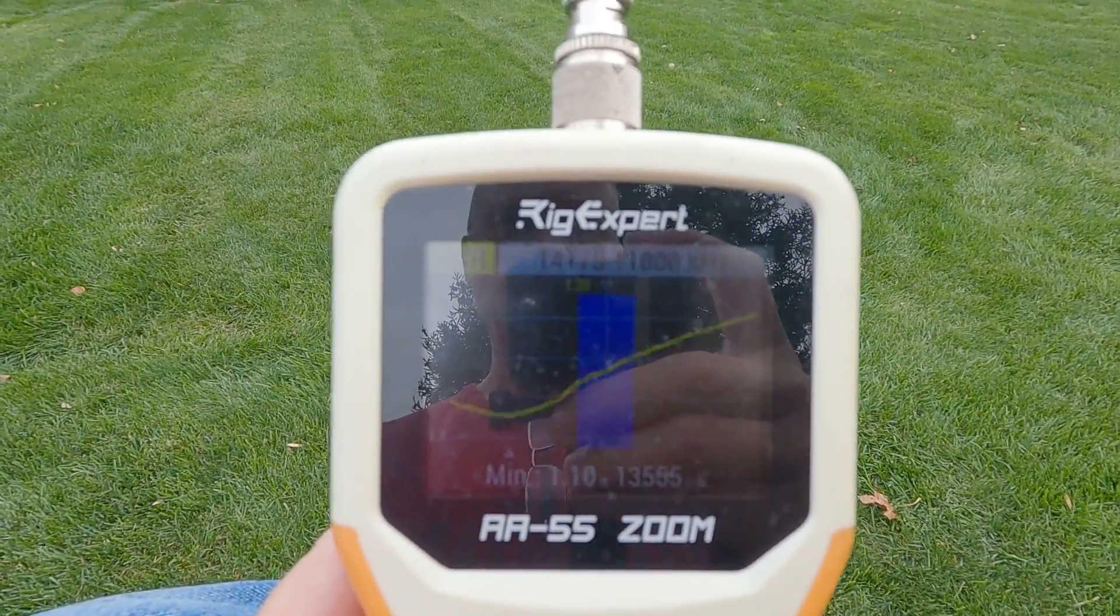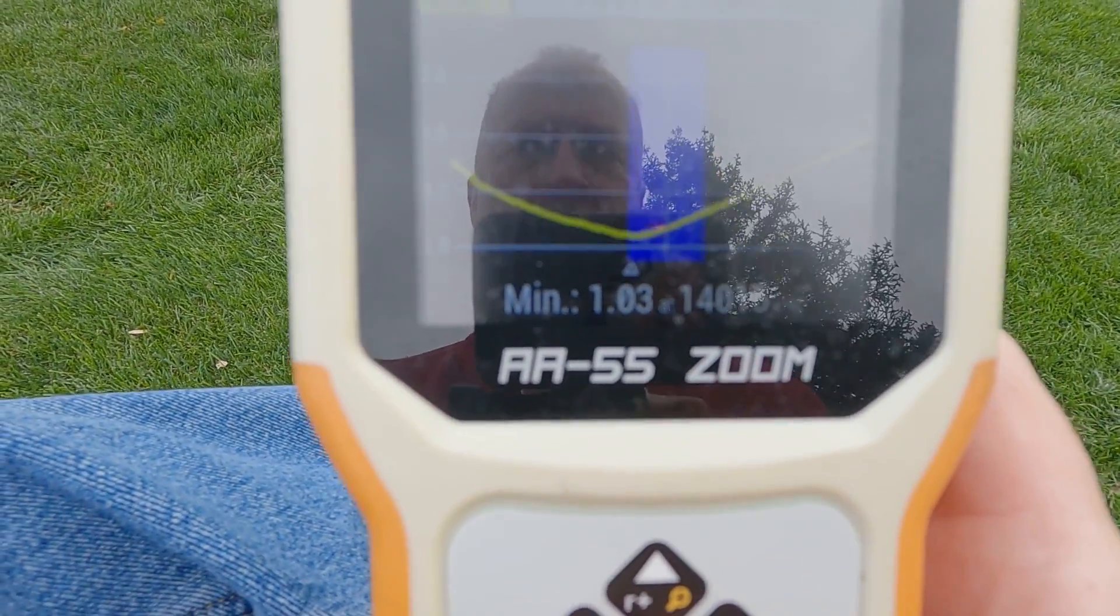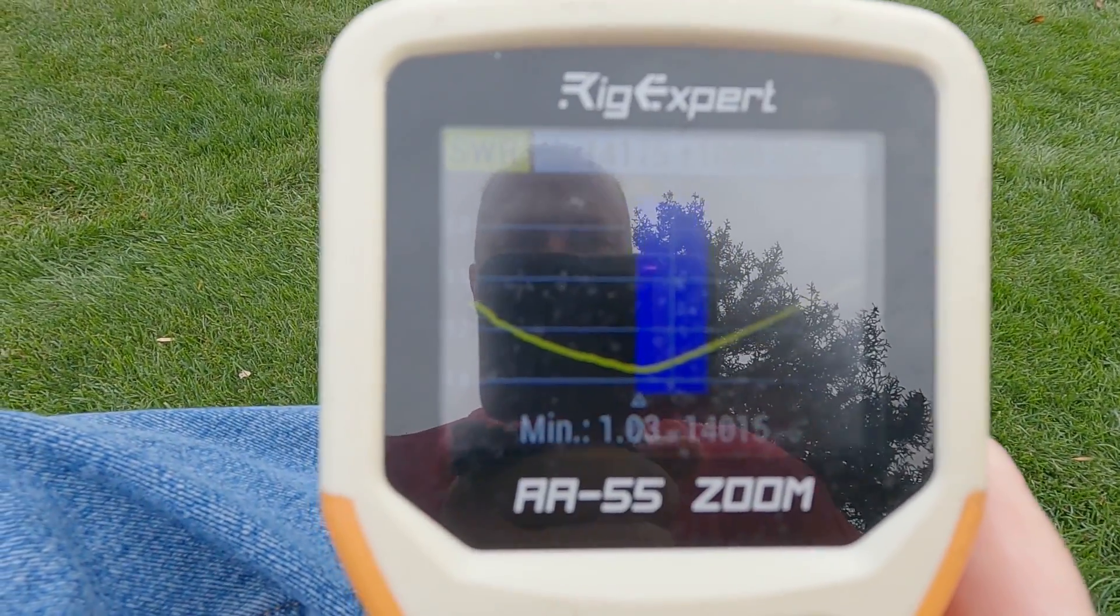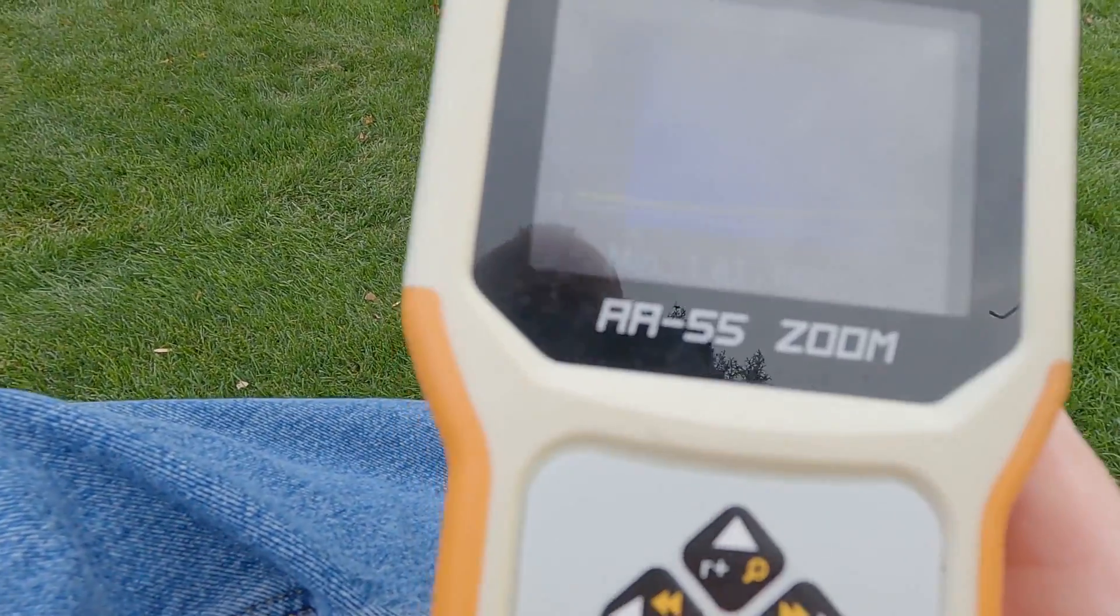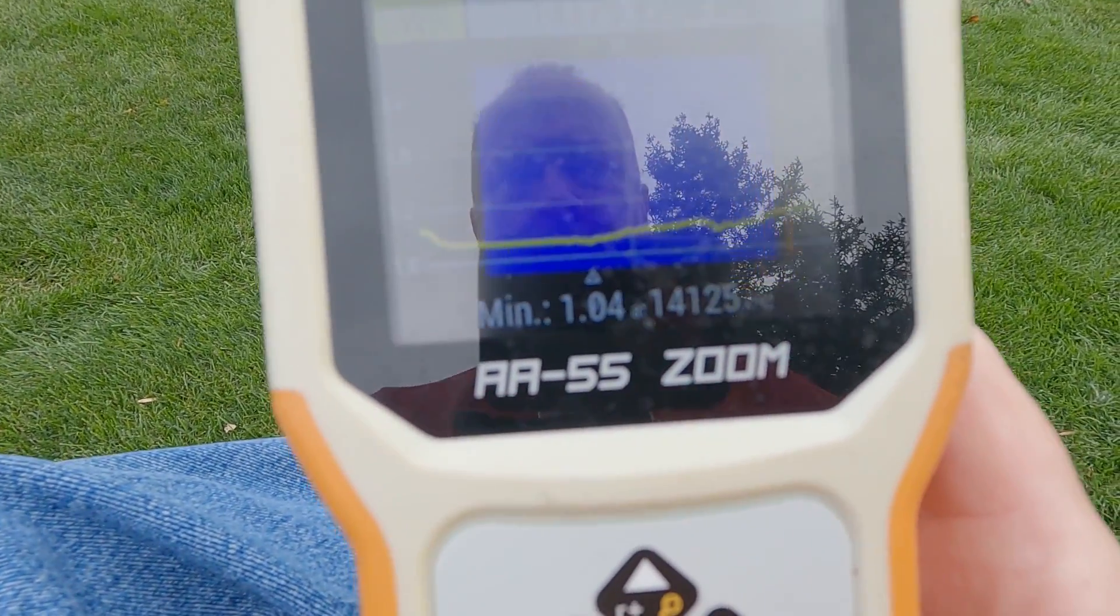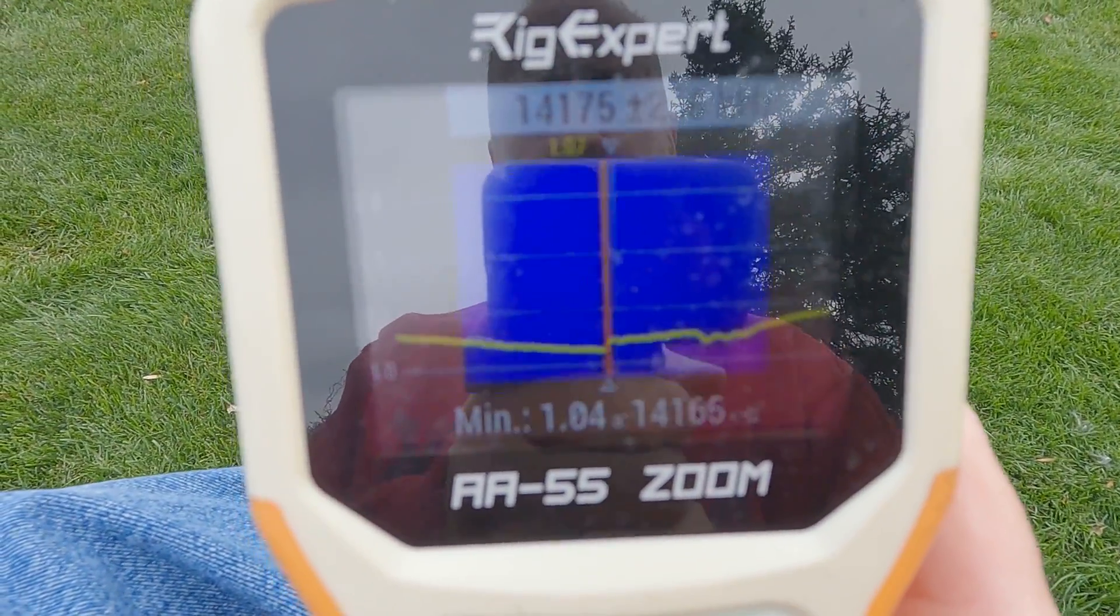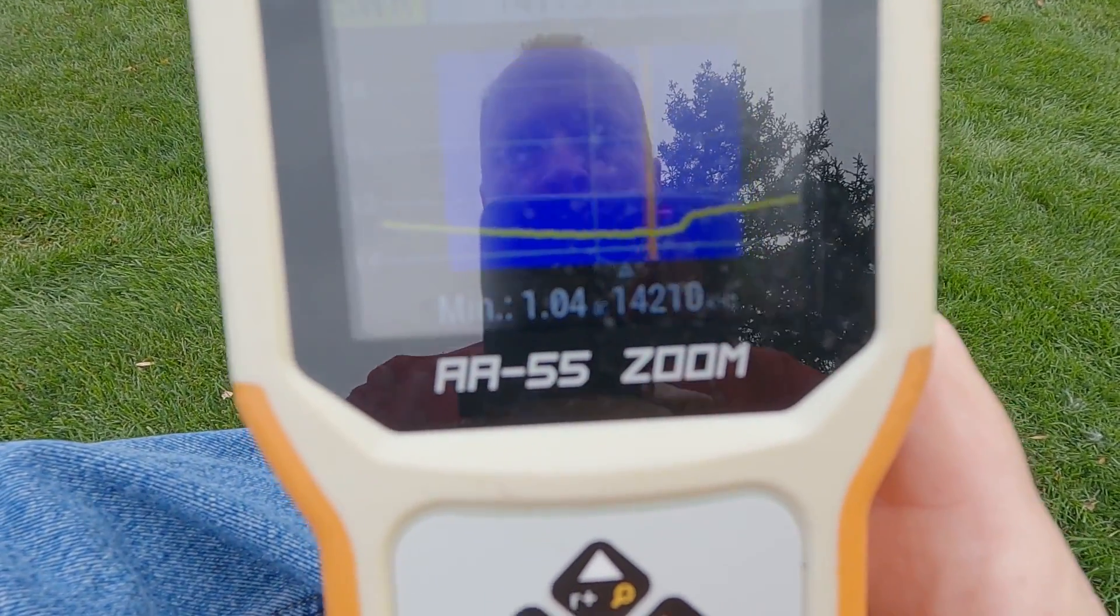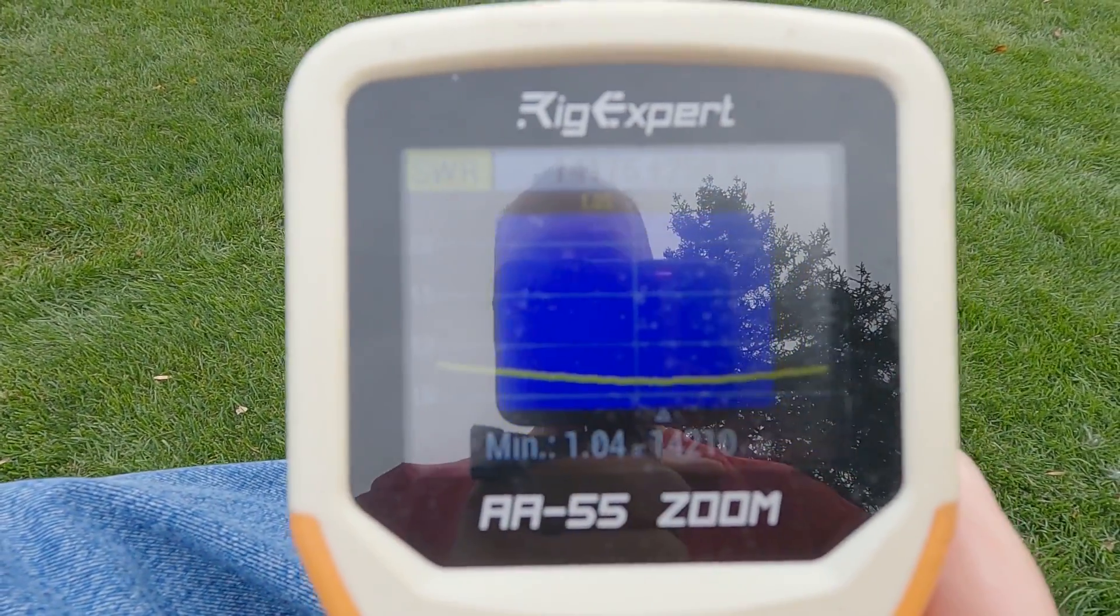Now we're pretty close. Minimum is actually inside the CW portion of the 20 meter band. I'm gonna make another minor adjustment here to see if we can get a little bit closer. Let's zoom in on that band just to see what we are. Let's redo the sweep. I'm tempted to leave it alone because we're sitting well under 1.2 to 1 across the entire band here. I think we've got it tuned up pretty well.